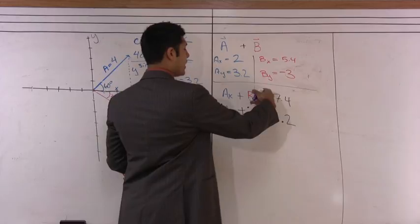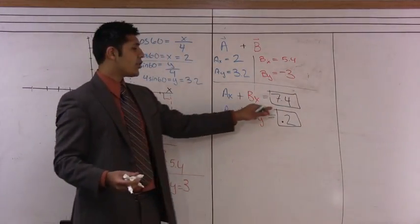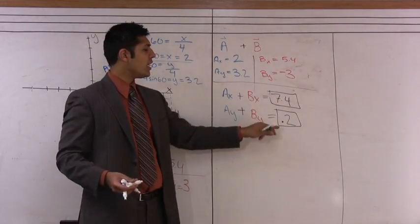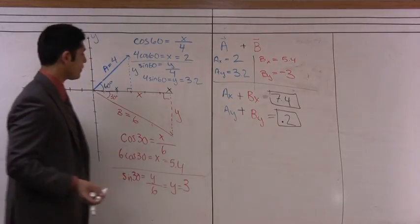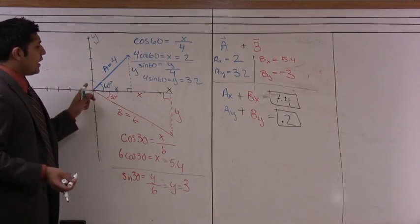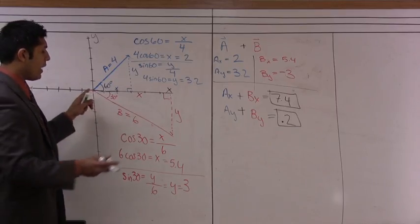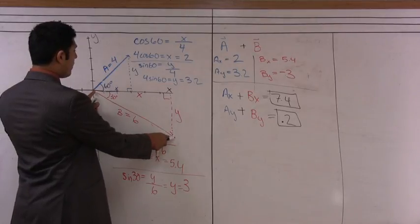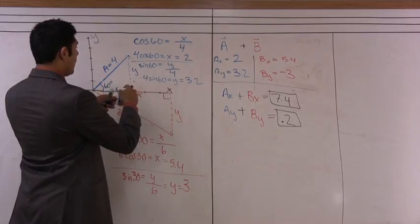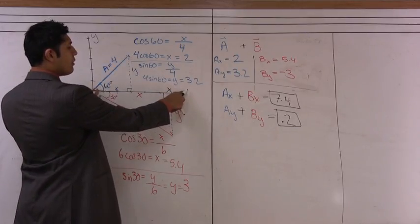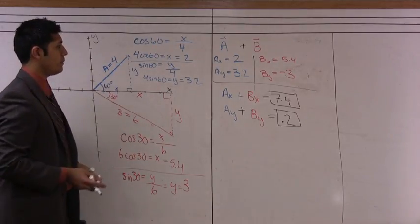So what this is saying is that my net vector, after I add up the components, should be 7.4 units long in the x direction and only 0.2 units long in the y direction. So what should happen here is that if I were to do the head-to-tail method and draw vector b off of the head of vector a, you can see that our net vector would be somewhere where the x component would be 7.4 units long and the y component would be only 0.2 units long.